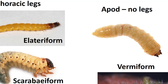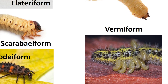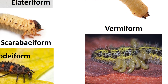Apod larvae lack true legs, are worm-like or maggot-like, and live in soil, mud, dung, decaying plant or animal matter, or within the bodies of other organisms such as parasitoids. Their form is called vermiform.